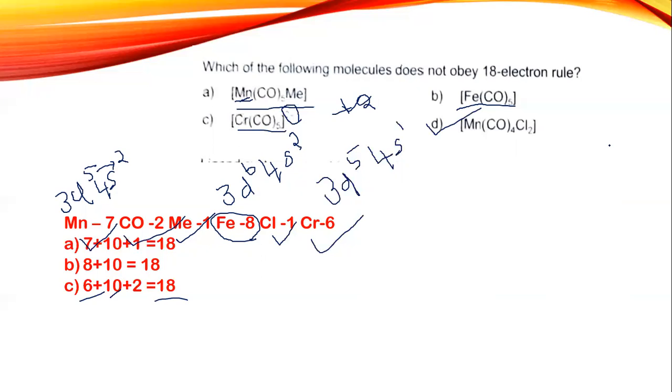Now let's take a look at option D. Manganese is giving 7 electrons, carbon monoxide is giving 8 electrons which sums to 15. Then each chlorine gives 1, each to make up 2. So 8 plus 2 is 10, plus 7 is 17. So option D, MnCO4Cl2 does not obey the 18 electron rule. In 18 electron rule, the total number of electrons in the complex should be 18. That is the answer. So option D is the answer we require.